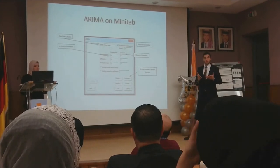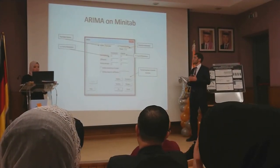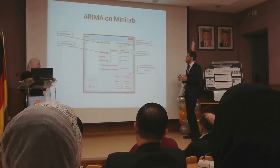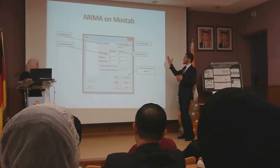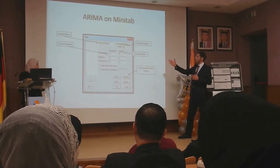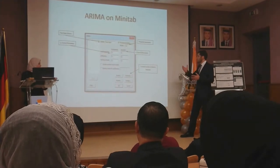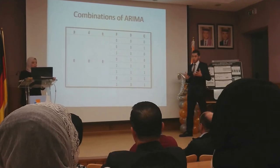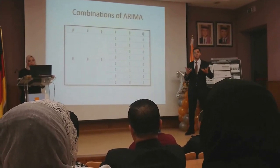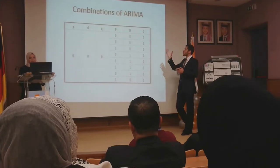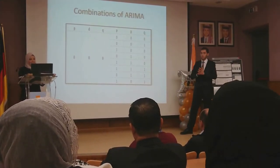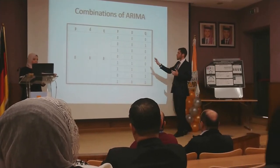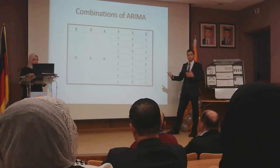We use the software Minitab, a statistical tool, to perform the ARIMA analysis. We inserted the different parameters such as seasonality, PDQ whether non-seasonal or seasonal, as well as the number of desired forecasts. For the parameter combinations, we used trial and error. Since we have six parameters — P, D, Q non-seasonal and P, D, Q seasonal — each of which could be either zero or one, we ended up with 64 combinations.